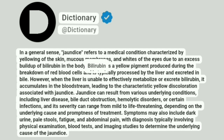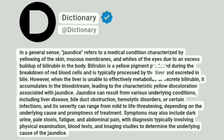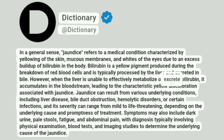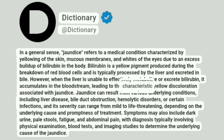Bilirubin is a yellow pigment produced during the breakdown of red blood cells and is typically processed by the liver and excreted in bile. However, when the liver is unable to effectively metabolize or excrete bilirubin, it accumulates in the bloodstream, leading to the characteristic yellow discoloration associated with jaundice.